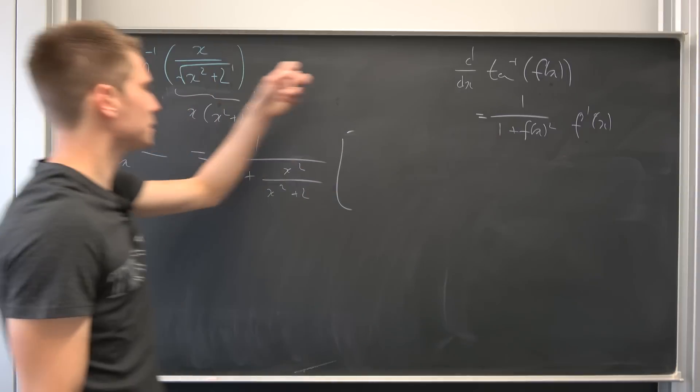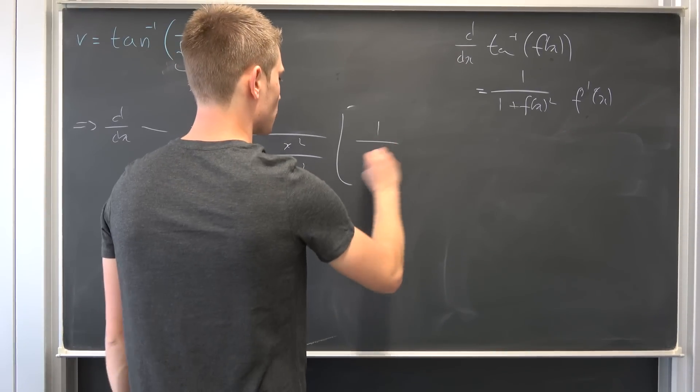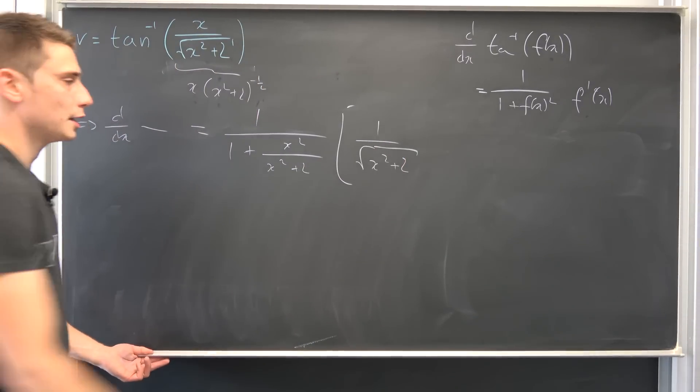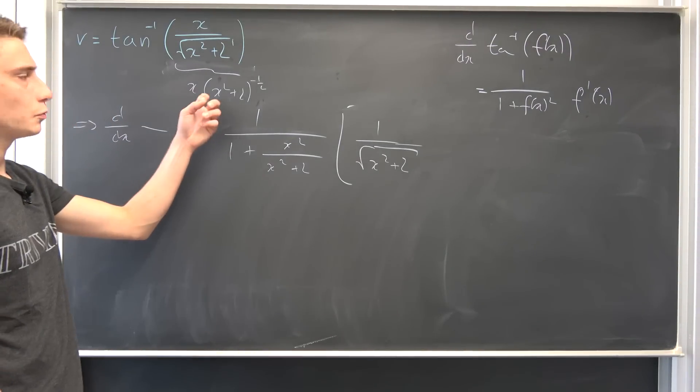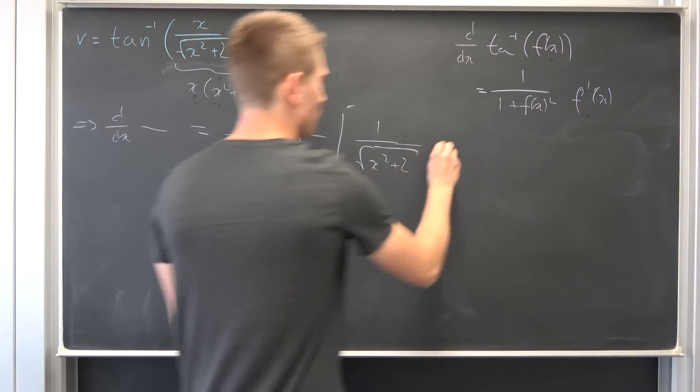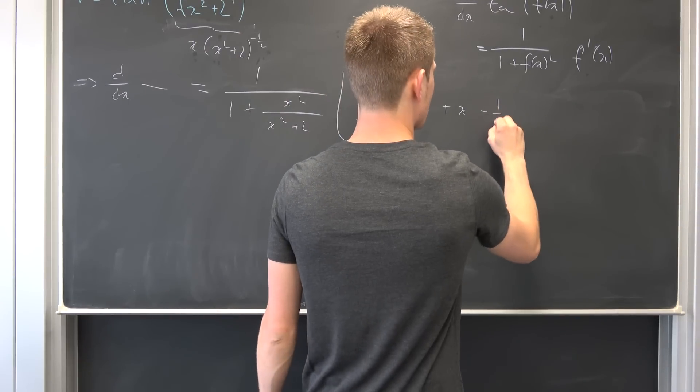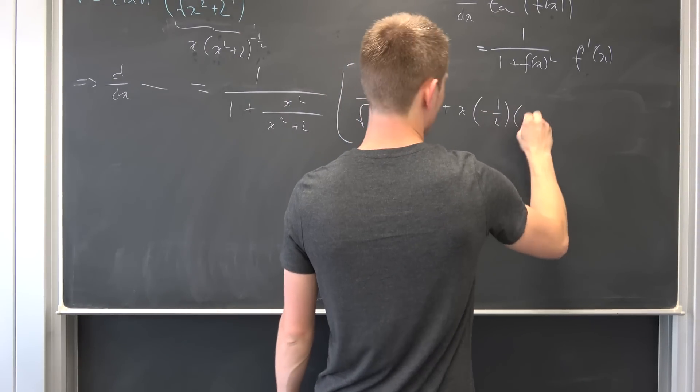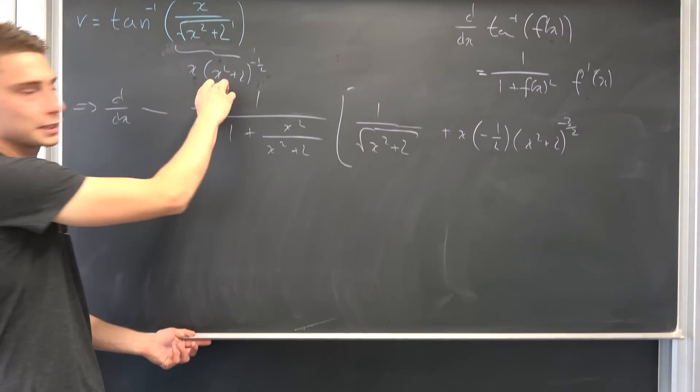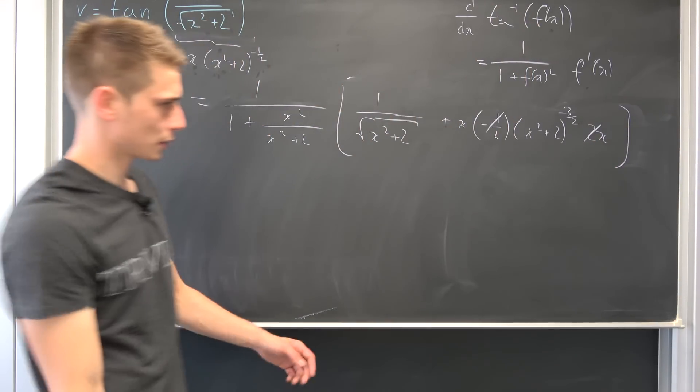And I would like to rewrite this argument right here as nothing but x times x squared plus two to negative one half power. Now we can differentiate this thing. That also means that d dx of this chunk is nothing but, well at first, this first weird thing, so one over one plus this argument squared, so x squared over x squared plus two. And you see this thing differentiated, this argument leaves us with the product rule. So I would like to differentiate x at first, so that's one over square root x squared plus two.